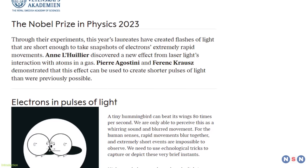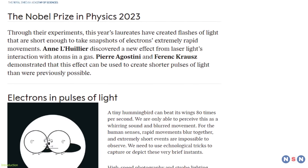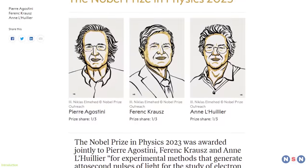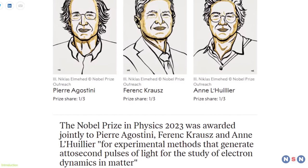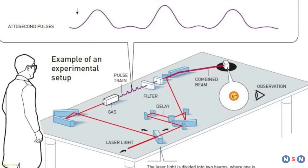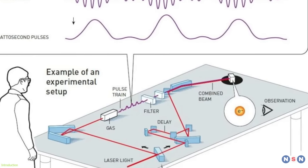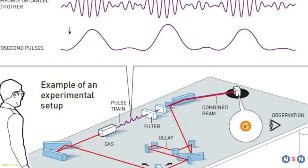These are some of the questions that the 2023 Nobel Prize in Physics tried to answer. The prize was awarded to three researchers who developed a groundbreaking technique called attosecond spectroscopy, which allows us to study the motion of electrons in matter with unprecedented temporal resolution.